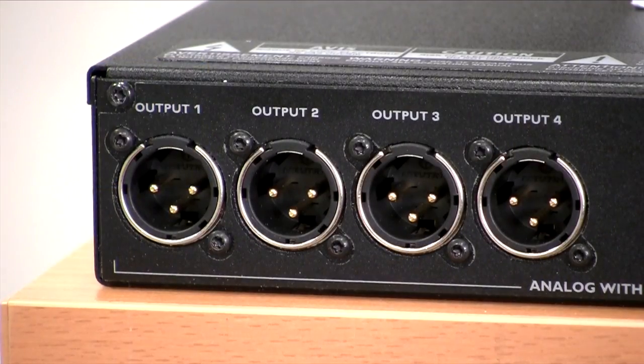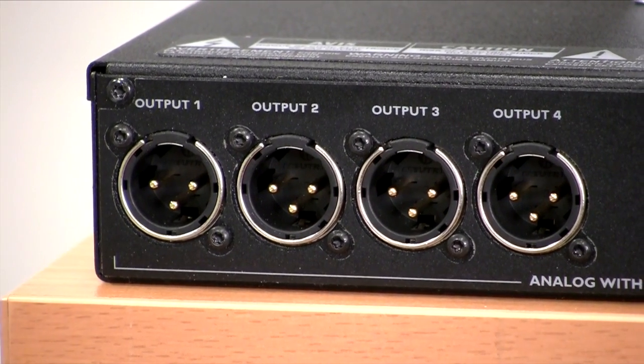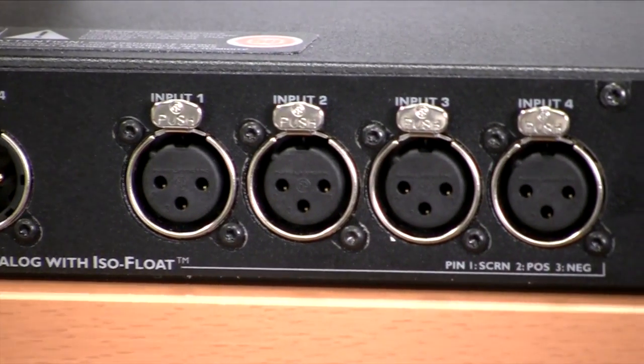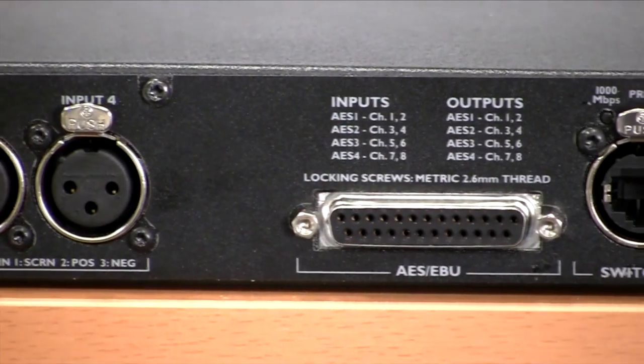This is the rear panel of the LM44. From left to right we have four analog inputs and outputs on Neutrik XLRs. AES I/O on the DB25 according to the Yamaha standard pinouts. Products are shipped with a fan out cable to XLR.